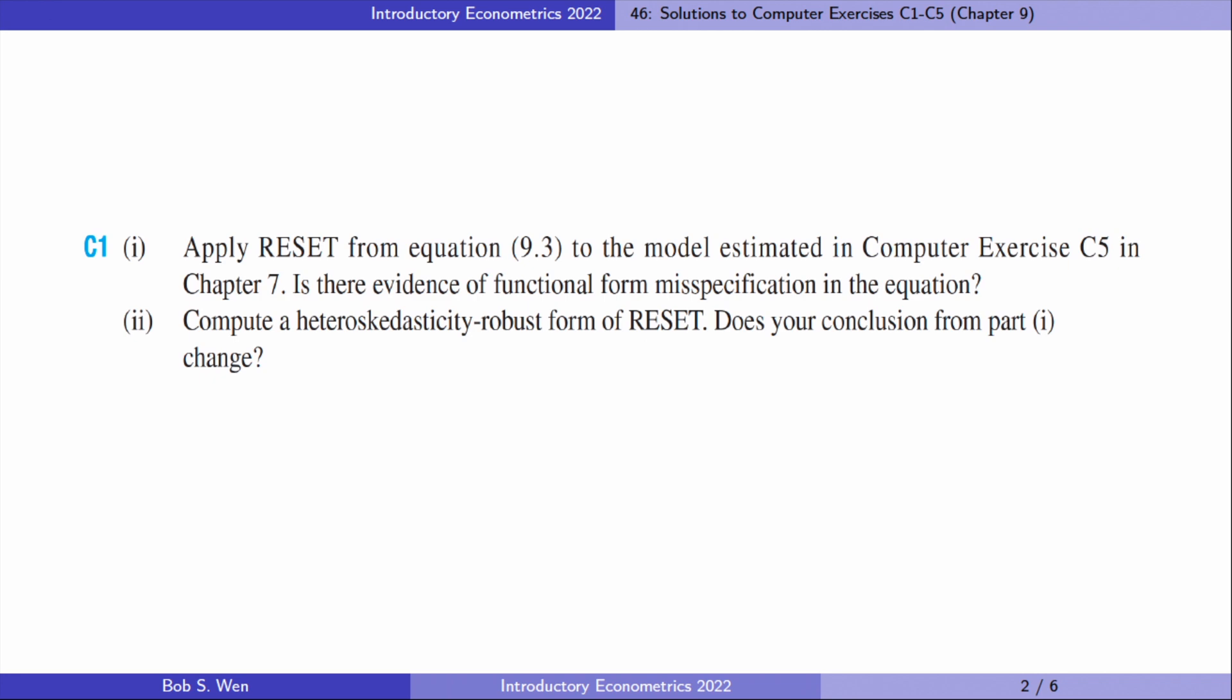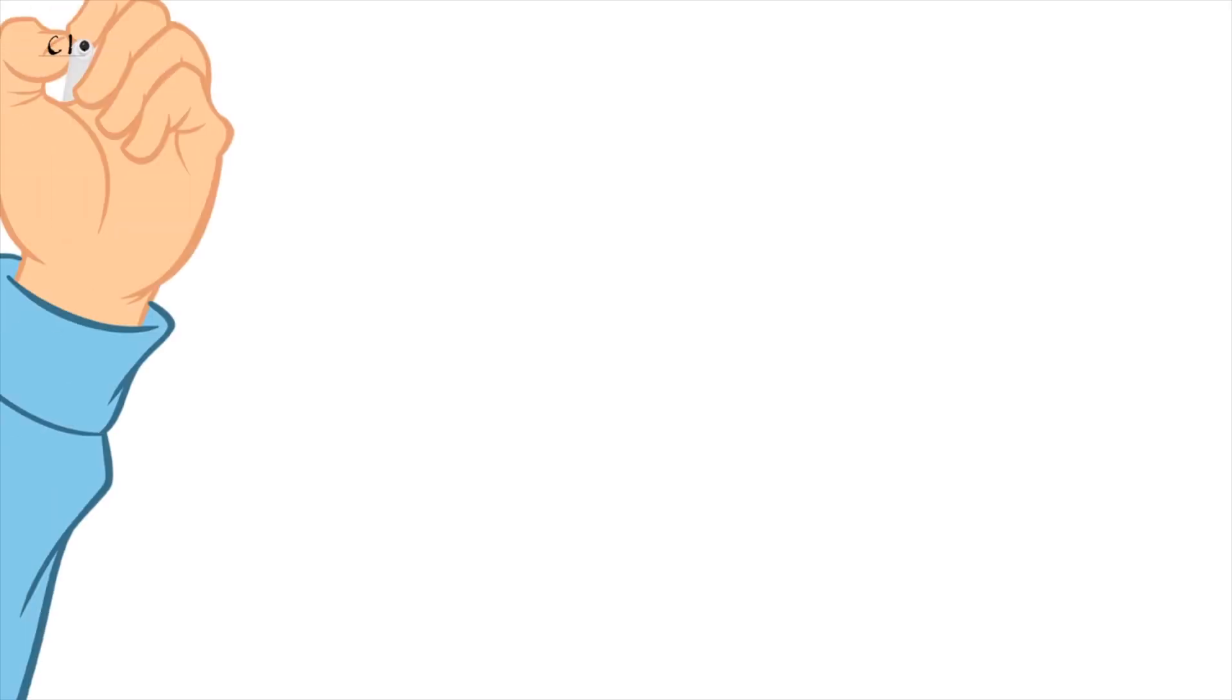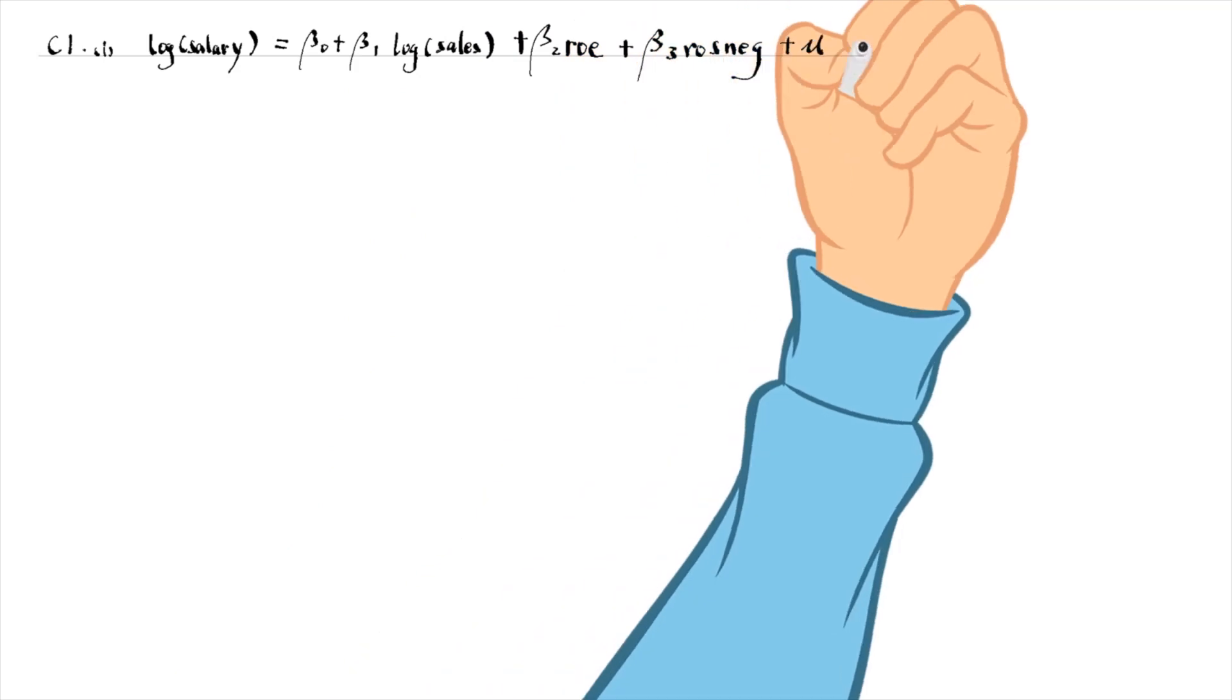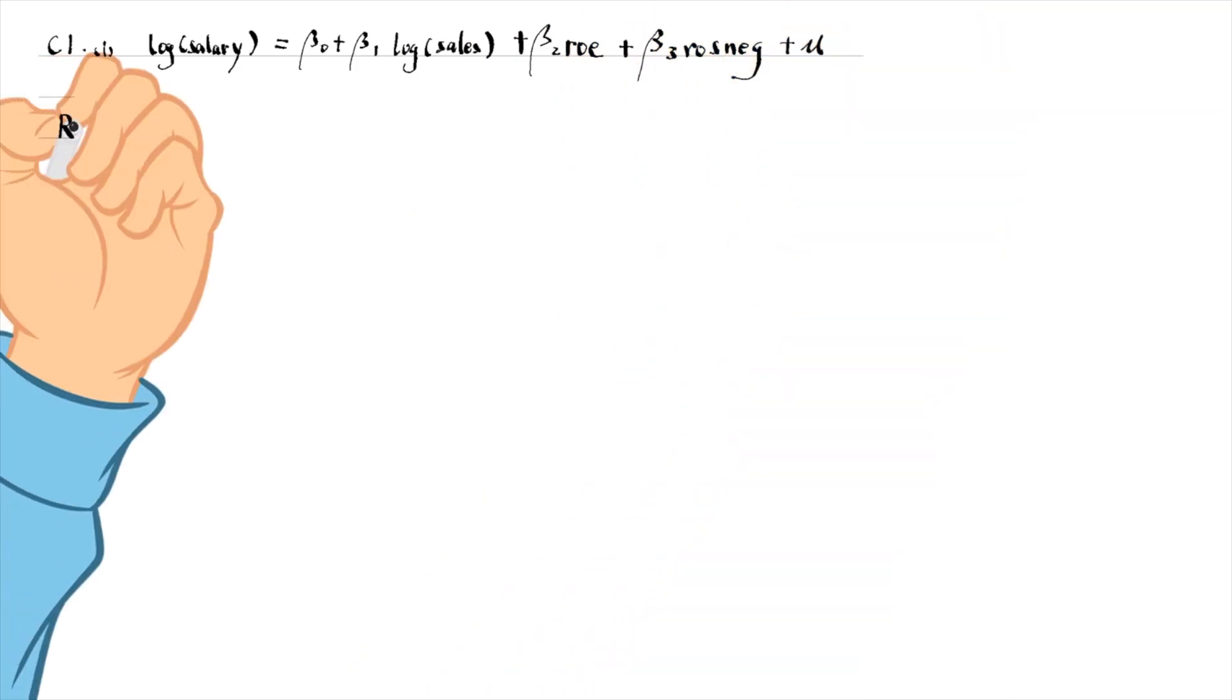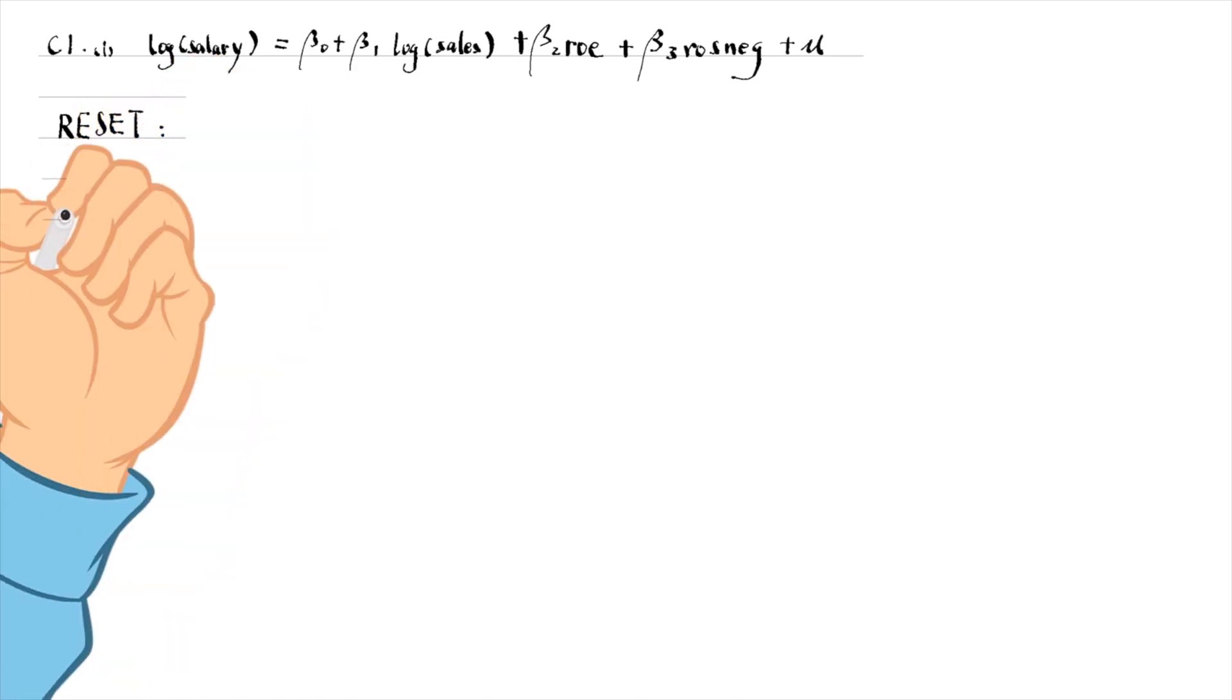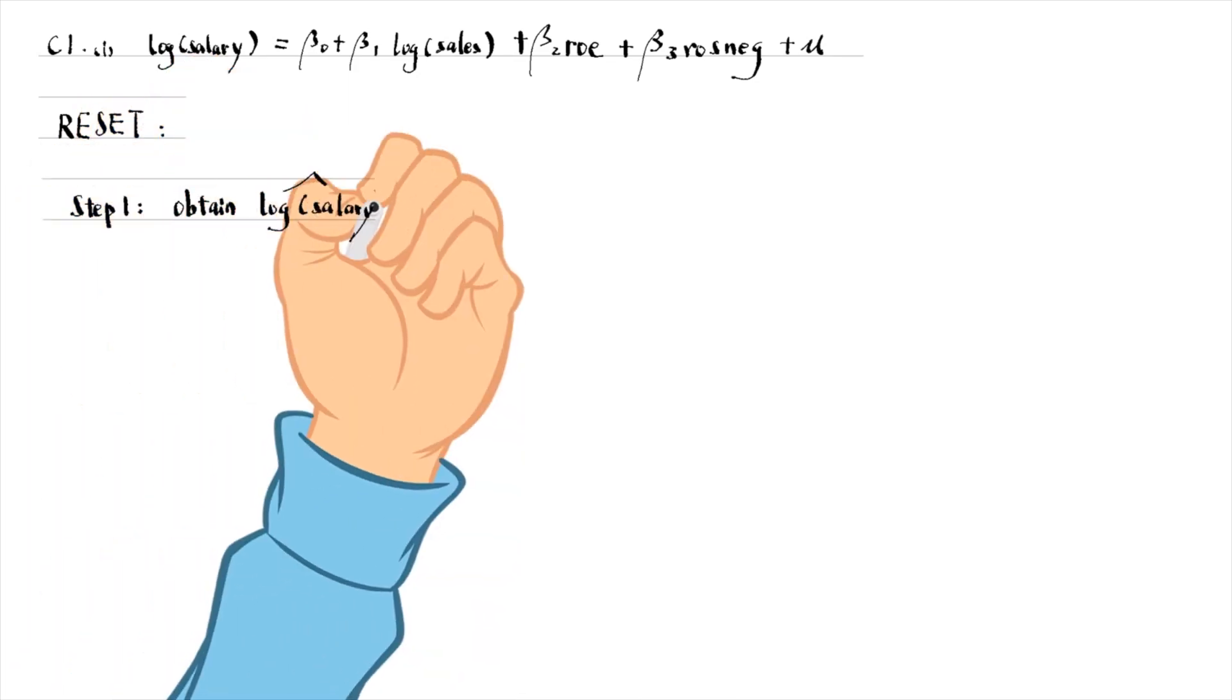We perform the Regression Specification Error Test in the first computer exercise. After regressing the log salary on log sales, return on equity, and the dummy variable of whether the return to stock is negative, we obtain the fitted values.